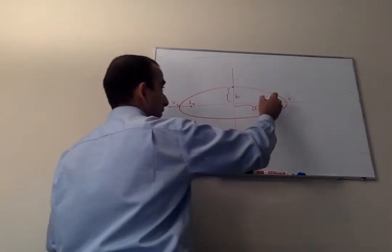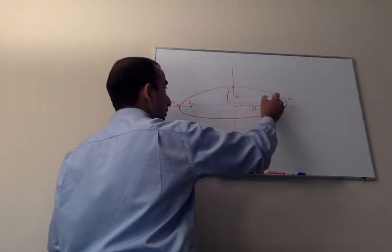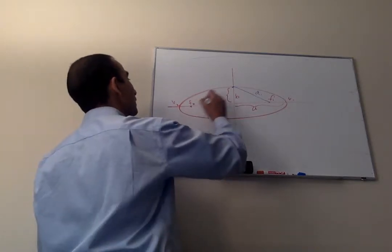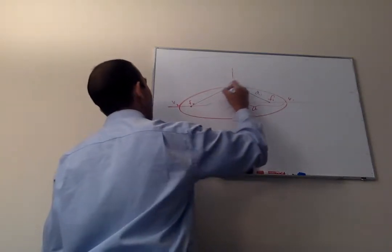the distance from foci 1 to this point, we could perhaps call D1. And the distance from foci 2 to this point, we could call D2.